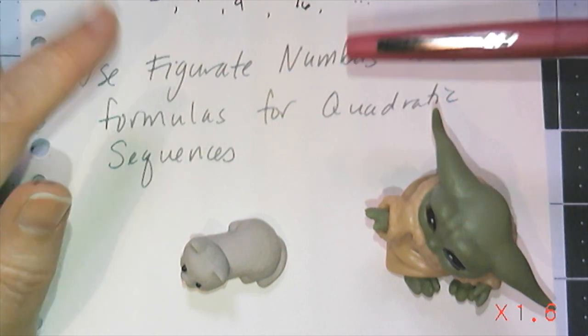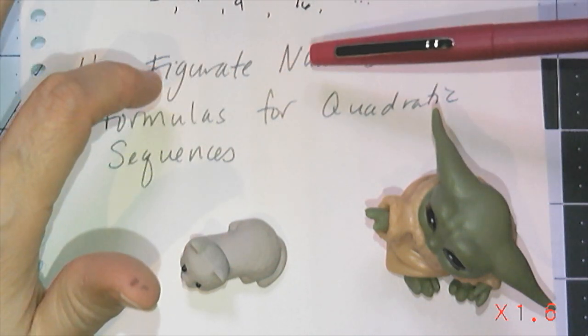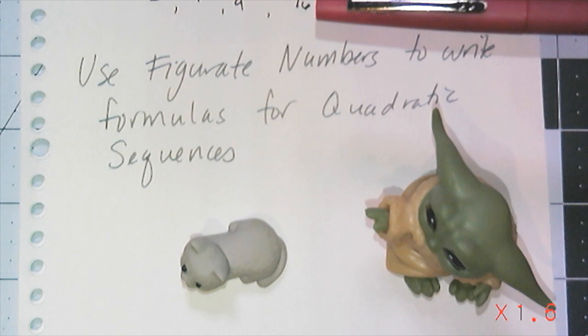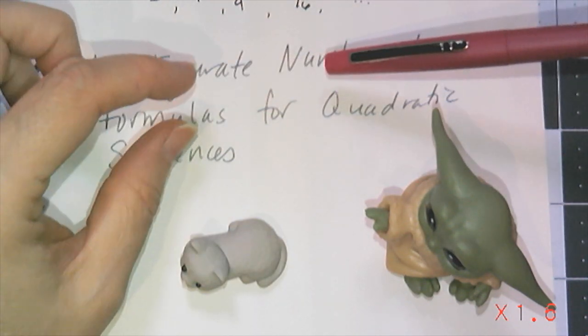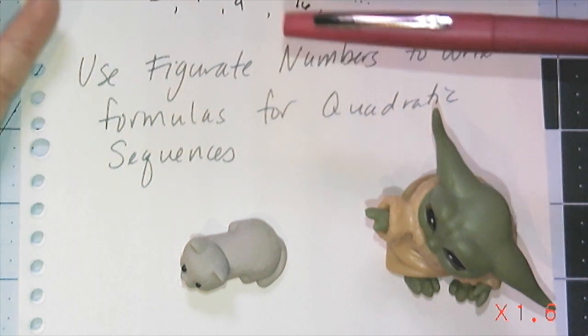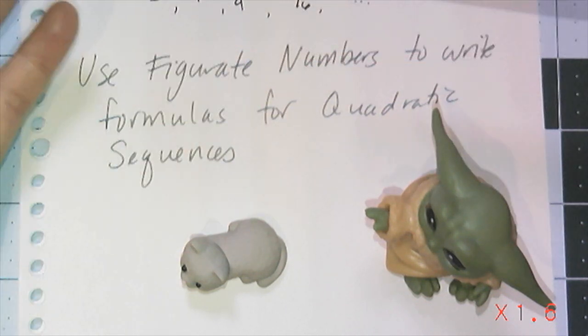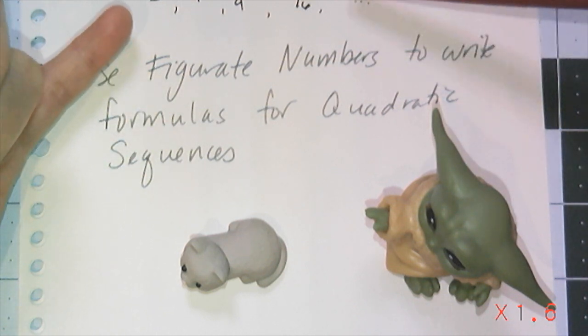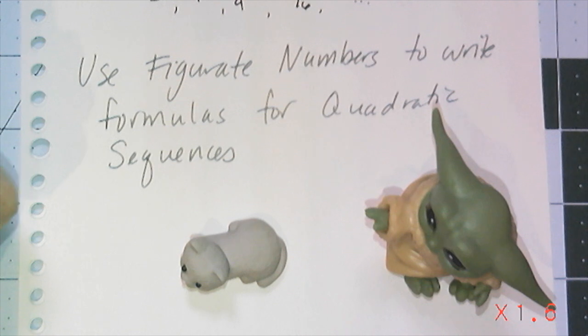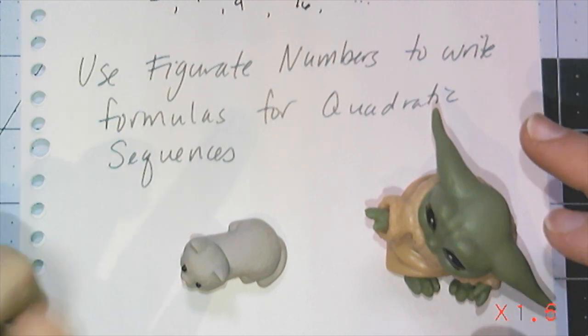If you remember from Algebra 1, a quadratic function is factored into a pair of linear expressions multiplied together. So every quadratic is really a linear times a linear. And so I'm going to use that along with a little bit of geometry and some inductive reasoning to write some quadratic sequences. I'm going to demonstrate how with three examples.